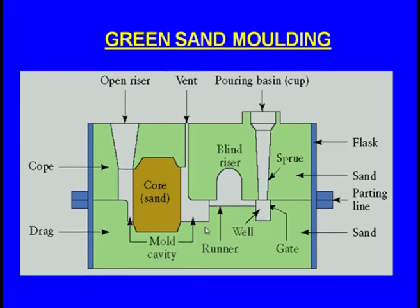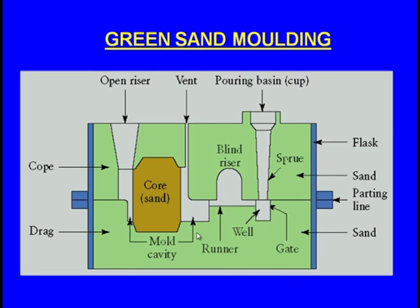First let us see the green sand molding. Green sand molding means the mold is made up of sand and moisture is always present — that is the meaning of green sand molding. In the typical setup, there are generally two molding boxes. The lower molding box is known as the drag and the upper molding box is known as the cope. Inside there is a mold cavity — suppose this is a cylindrical cavity. To make a hollow space inside the casting, a sand core is kept inside the cavity.